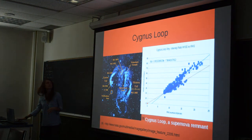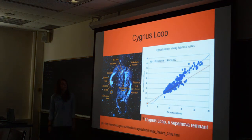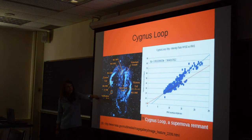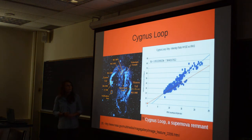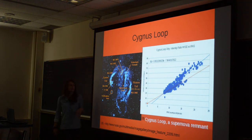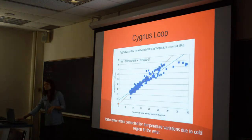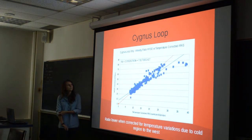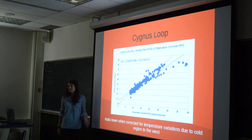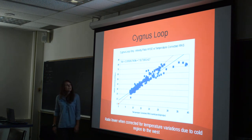We then looked at another supernova remnant — the Cygnus Loop. At first our data showed that the ratio was actually higher than expected, which is strange. Looking further, we found a colder area where some of the larger grains were just a degree cooler, but that can make a big difference in emissions. We corrected for that using the Planck function. The slope is lower after correction, but still not by much — we expected it to be near zero, but it's not.